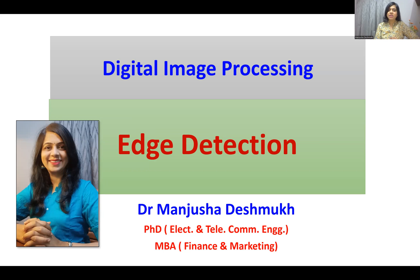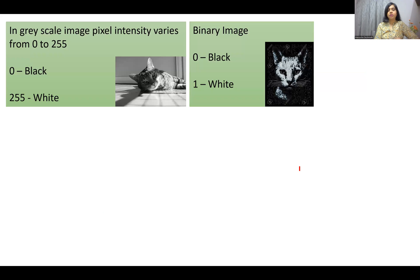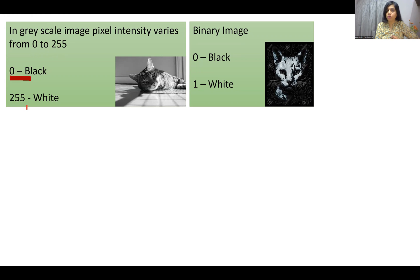Hello everyone. In this video I am explaining edge detection techniques, which is the topic of digital image processing. This is a gray image and in a grayscale image the pixel intensity values vary from 0 to 255, where 0 represents perfect black, 255 represents perfect white, and all other values represent other gray shades. In a binary image, 0 represents black and 1 represents white.